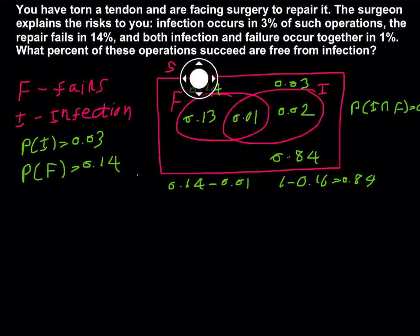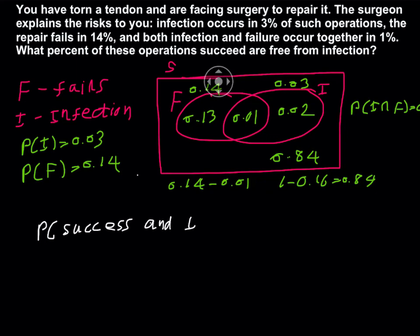Therefore, what's the question? What percent of these operations succeed and are free from infection? Then actually we know, I will write down probability success and infection free. We already know 0.84, but let me write down 1 minus 0.16 equals 0.84.